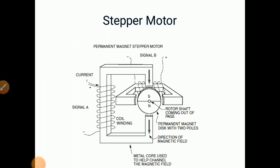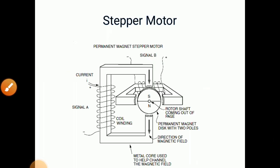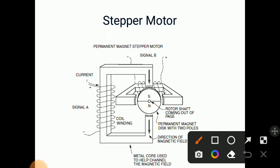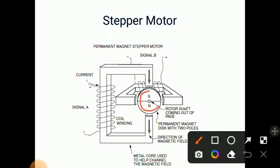This is the diagram of a stepper motor — a permanent magnet stepper motor. Here coils are used: signal A and signal B. Signal A passes through one coil and signal B through another coil, so there are two signals A and B. A permanent magnet disk with two poles, S and N, is used. The rotor shaft comes out of the page between the S and N poles.